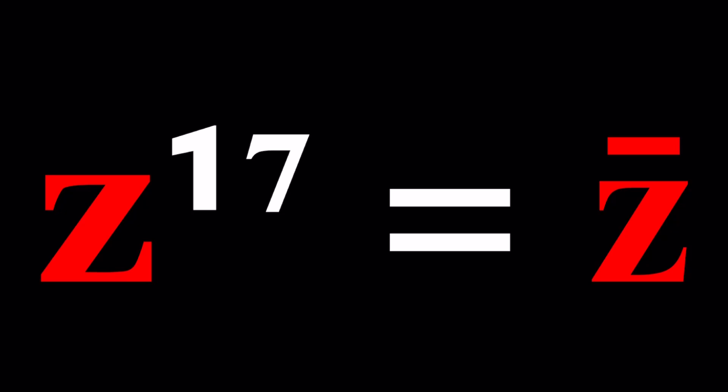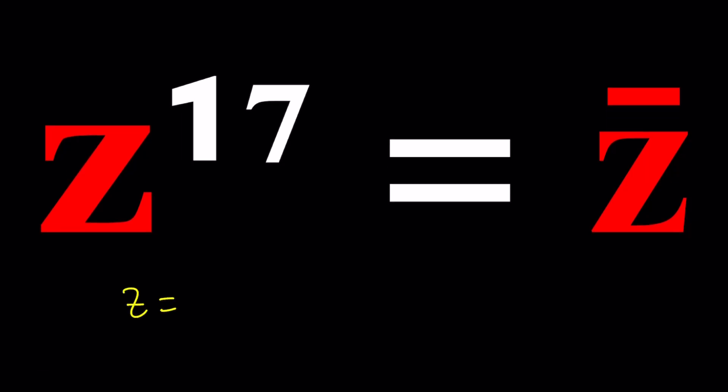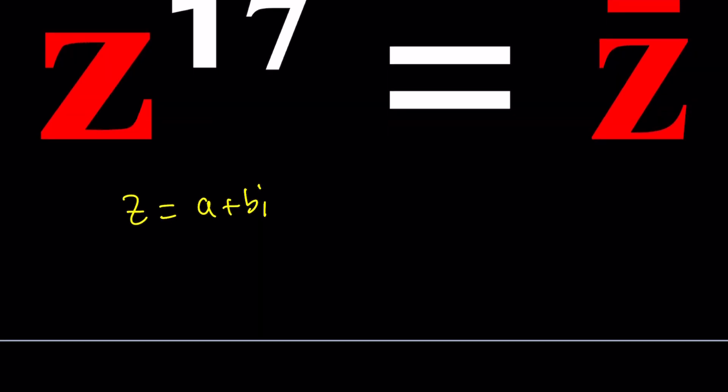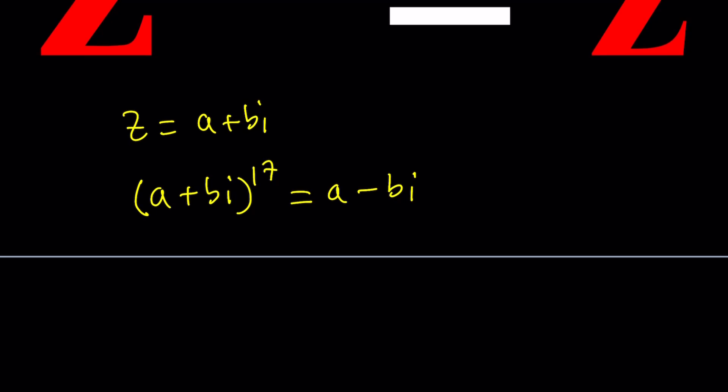So first of all, let's replace Z with A plus B I. And from here we're going to get the following equation. A plus B I, that's the name of this channel, right? To the 17th power equals complex conjugate, which is A minus B I. You just change the imaginary part.